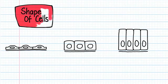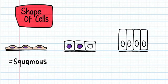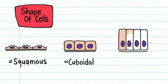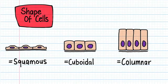Next, let's look at the shape of epithelial cells. If the cells are flat, we call the epithelium squamous. If the cells are cube-like, the epithelium is cuboidal. And if the cells are column-shaped, the epithelium is columnar.